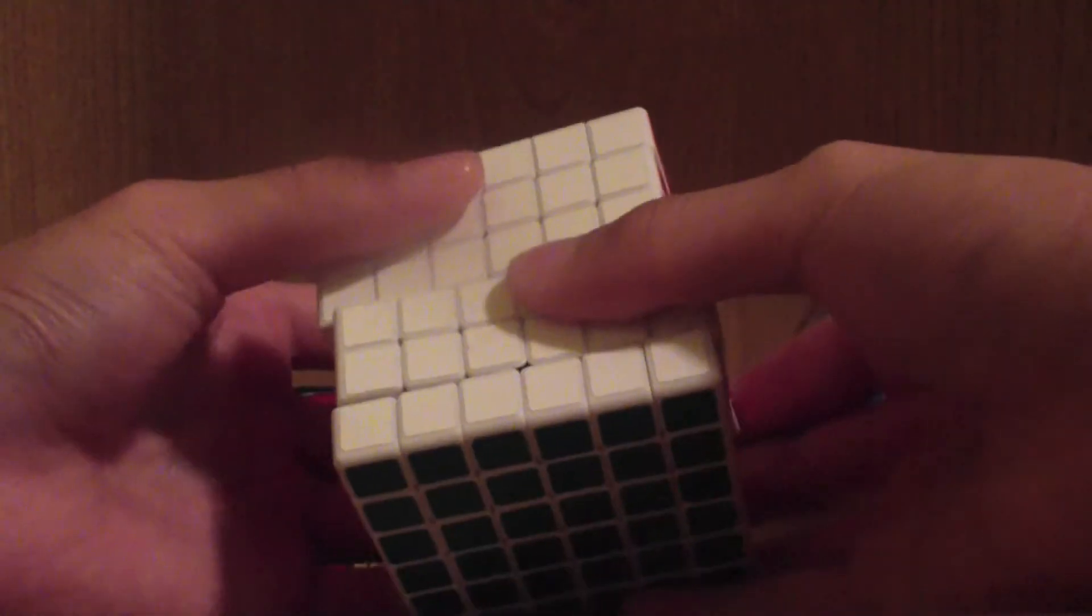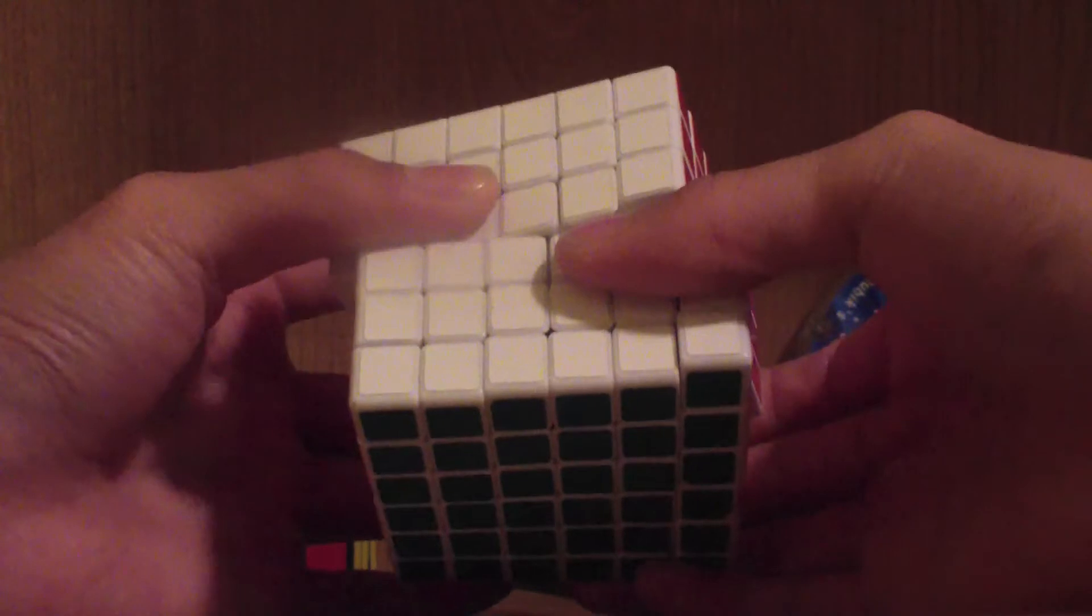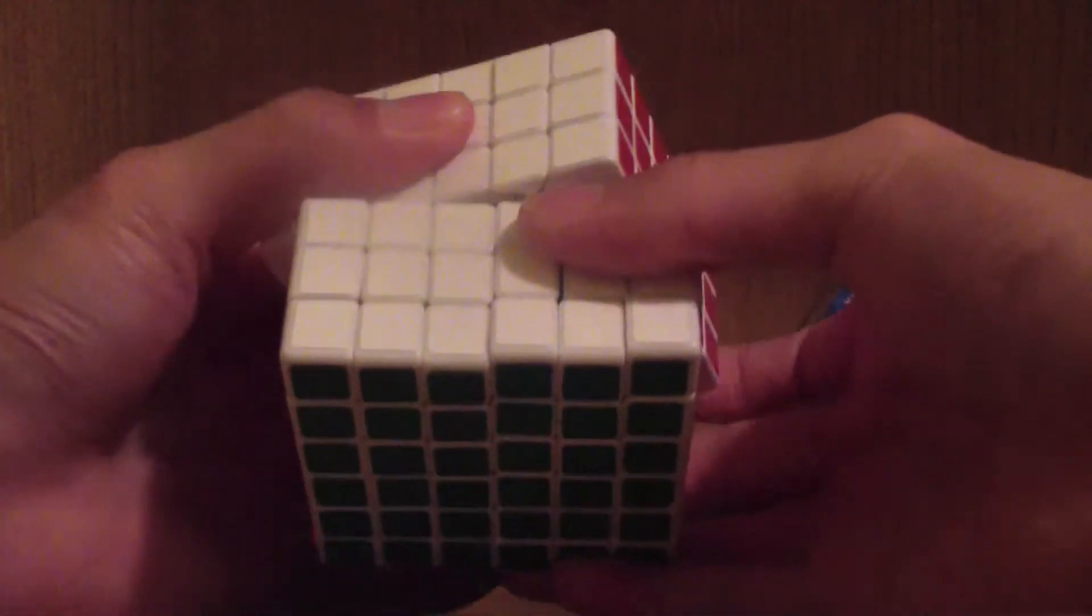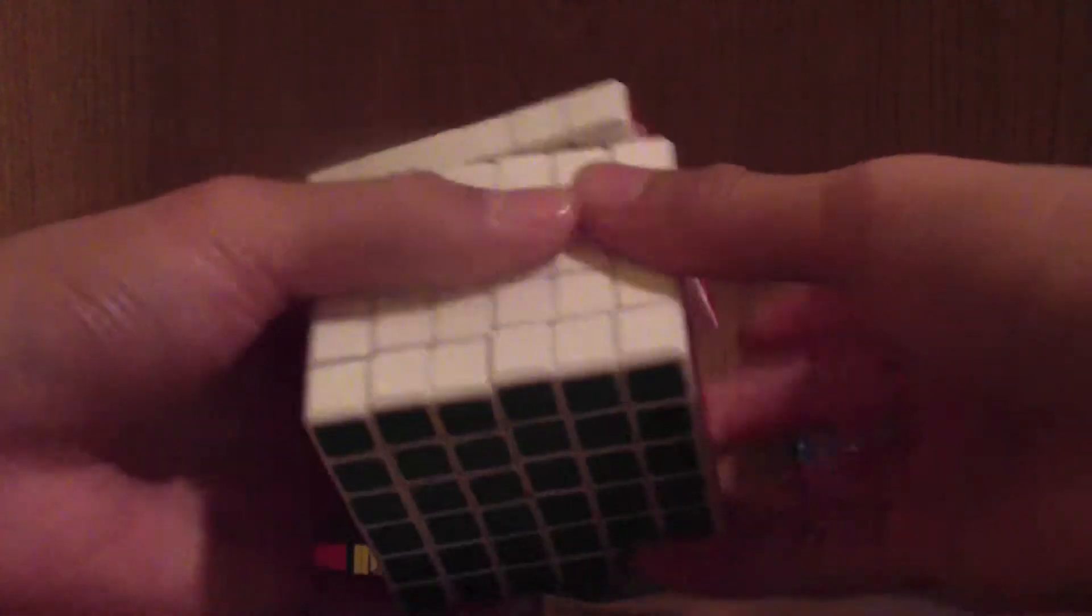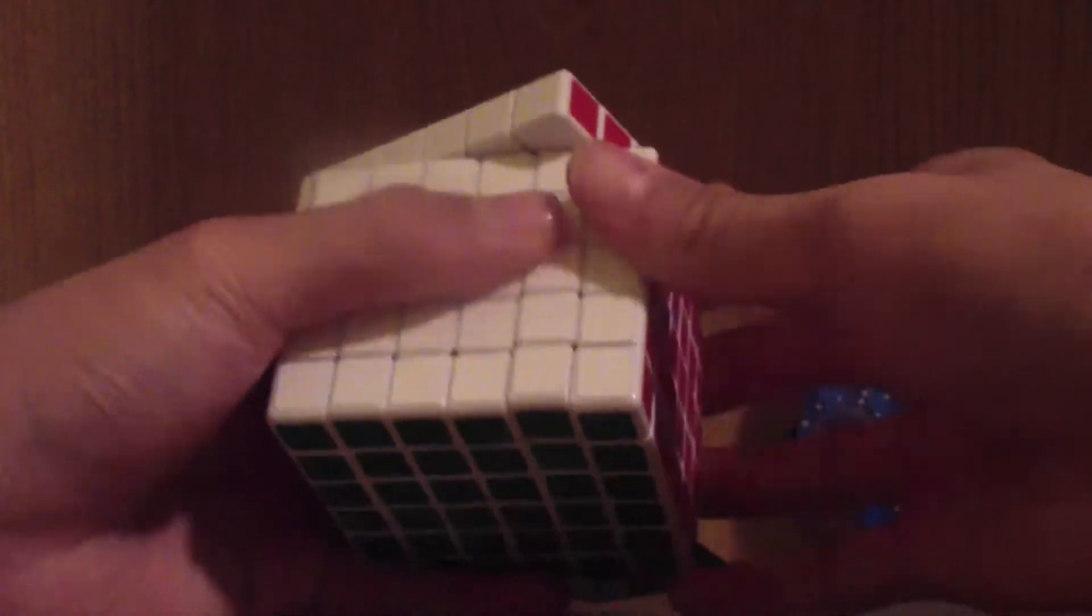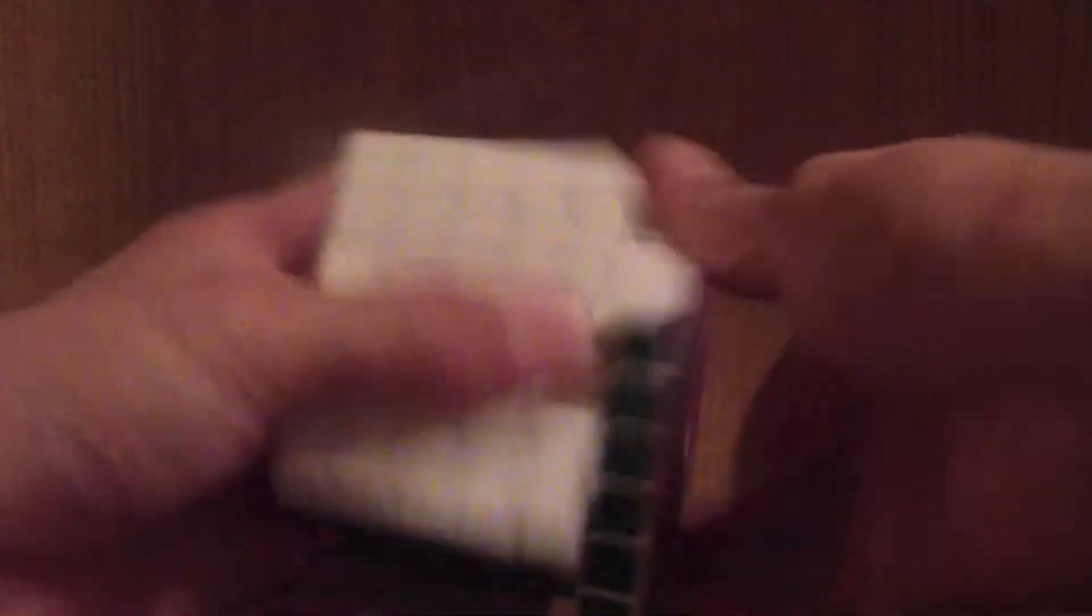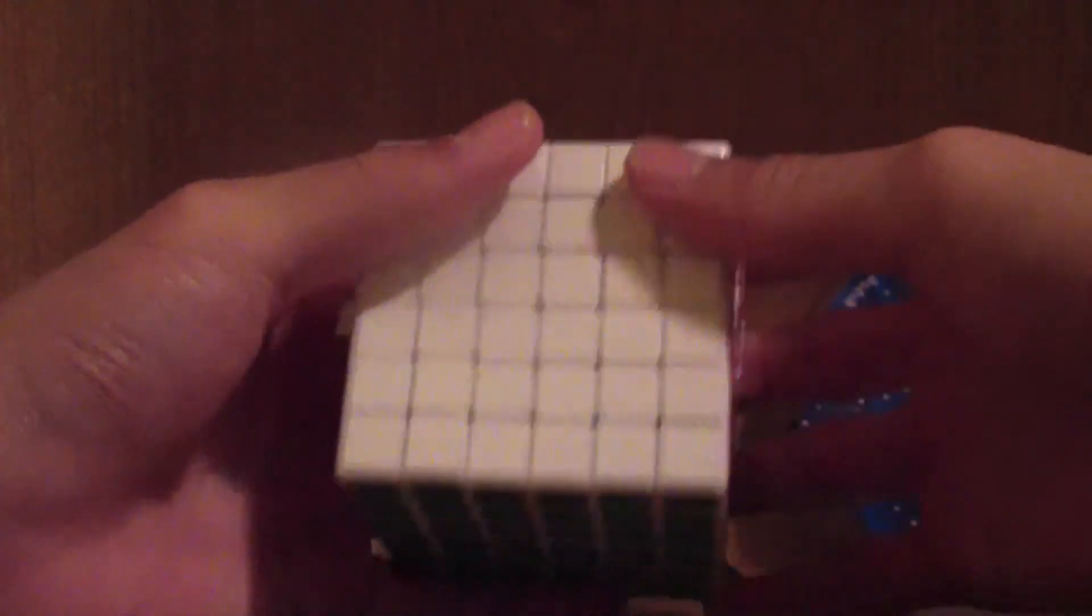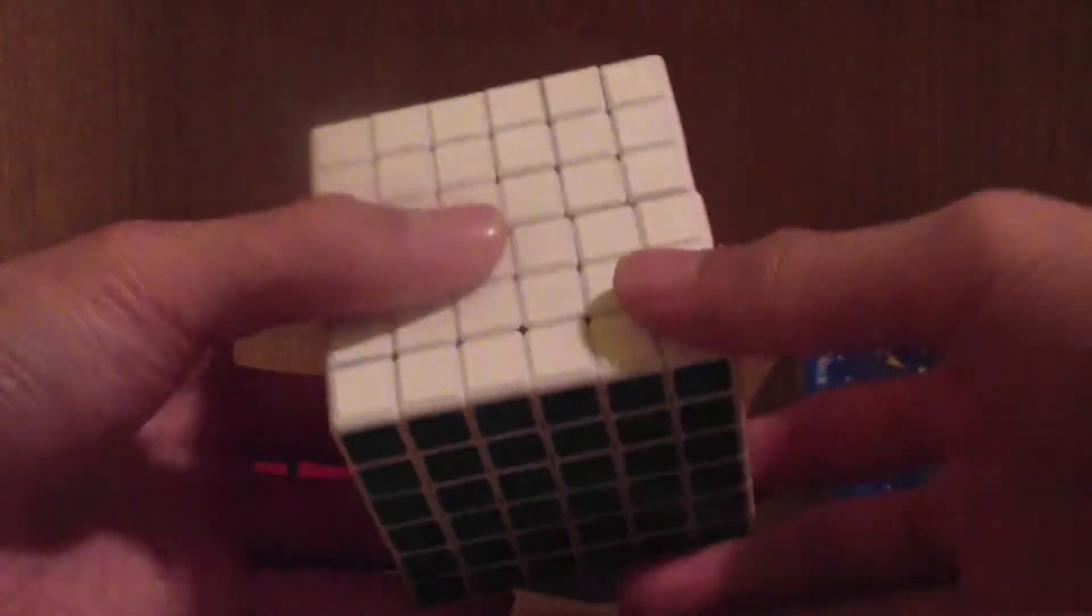Inner layer turning is pretty smooth, corner cutting in inner layers is pretty risky because it can pop easier. I really don't want to extend its limits so I'm just going to stop there. Corner cutting on outer layer is decent, and turning in general is really smooth, quite fast for a large order cube, a 6x6 and still pretty fast.